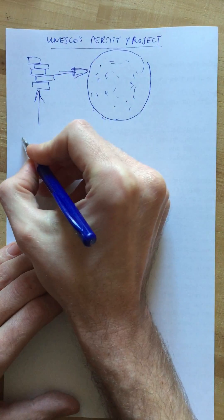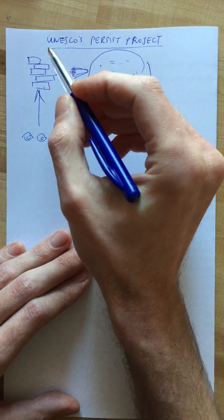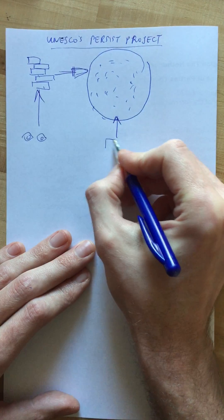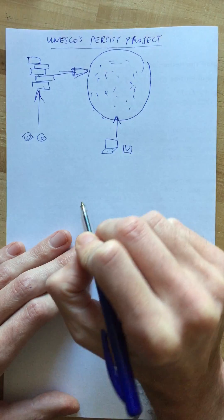In the analog society it was enough to have two eyes to access information because we could directly read the books. But in the digital information society we need a computer to access information and we need software.